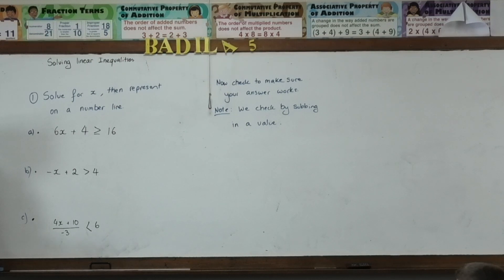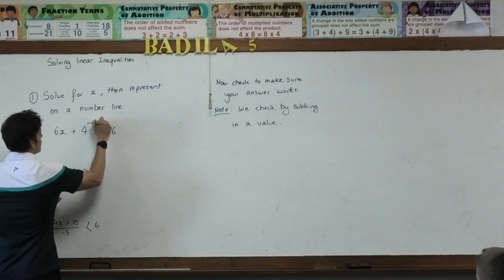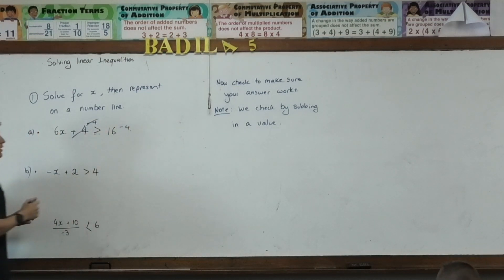I want to get X by itself, correct? And how do I do that? Reverse BODMAS and opposite operations, correct? So, what's the first thing I want to take, Mikey? Take away four. Yeah, I want to get rid of that four, so I subtract four from both sides. So, there's nothing different at this stage, the way we go about it.